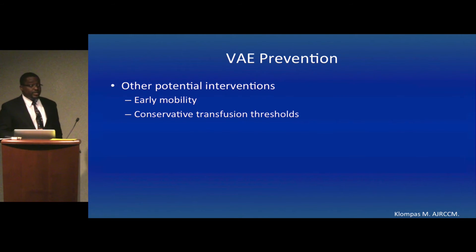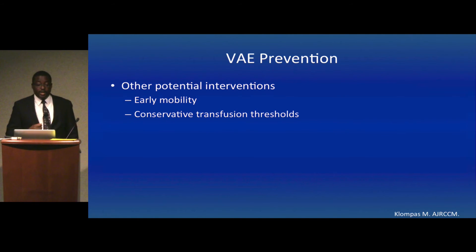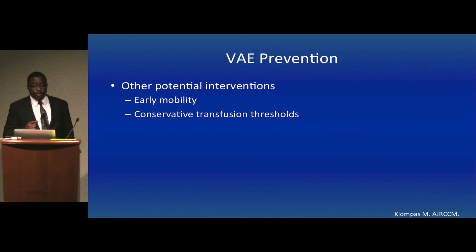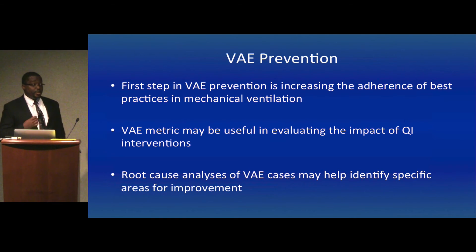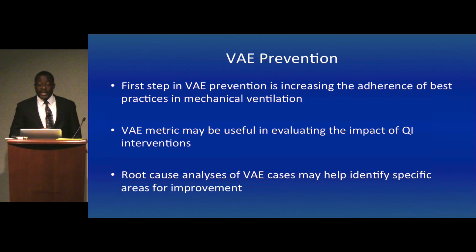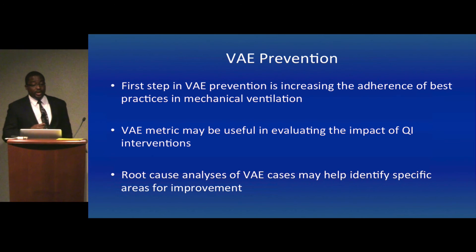Other potential interventions that could reduce VAE rates include early mobility in mechanically ventilated patients and use of conservative transfusion thresholds. These have not been studied directly in VAE patients, but it is likely they will also be effective. The first step in VAE prevention is increasing adherence to best practices in managing mechanically ventilated patients, requiring accurate data on adherence to key processes of care in order to design improvement programs. The VAE metric could serve as a good outcome measure to evaluate the impact of these quality improvement interventions.